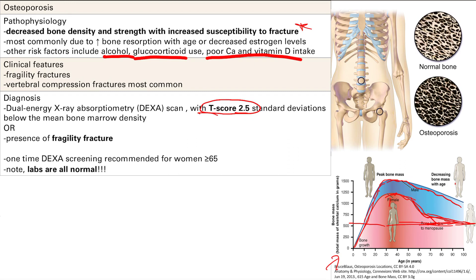That 2.5 T-score standard deviation is really important — it's not 3, it's not 2, it's 2.5. Burn that in your mind. You can also diagnose osteoporosis if the patient has a fragility fracture, which is a fracture with minimal or no trauma. We recommend a one-time DEXA screen for women over 65. Also note that all labs are normal — the patient only has decreased bone mass, but calcium levels, parathyroid hormone, and other labs are normal.